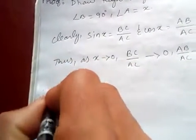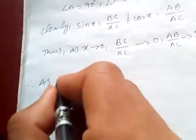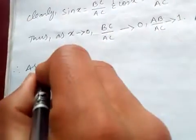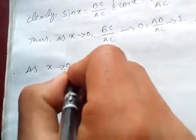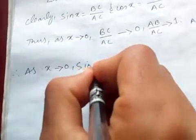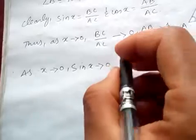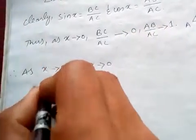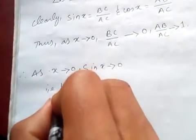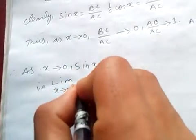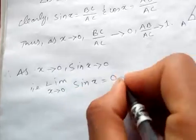And therefore, as x tends to 0, sine of x tends to 0, because sine of 0 is 0. Then, limit x tends to 0, sine of x is 0. This is proof 1.